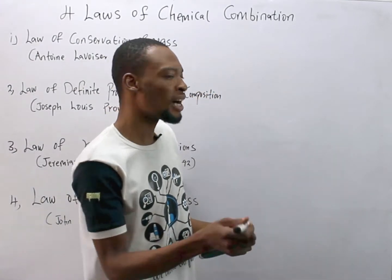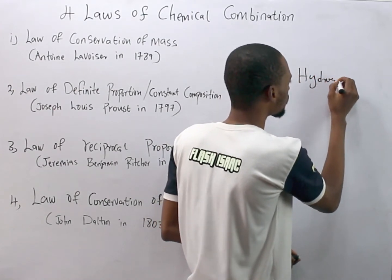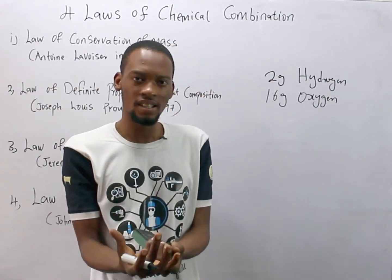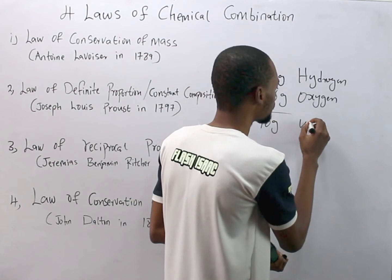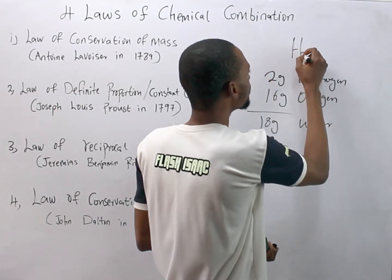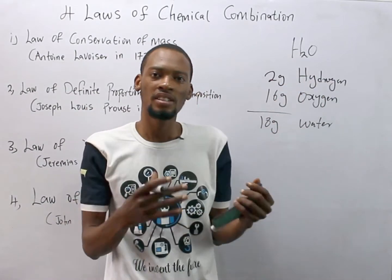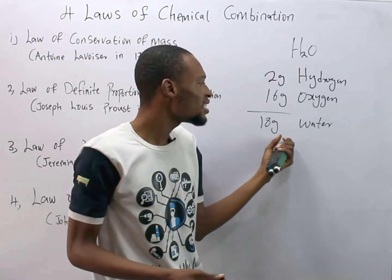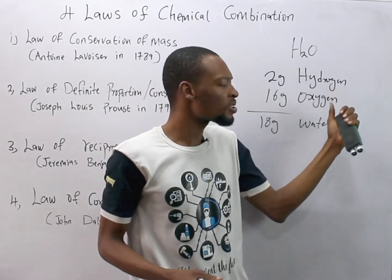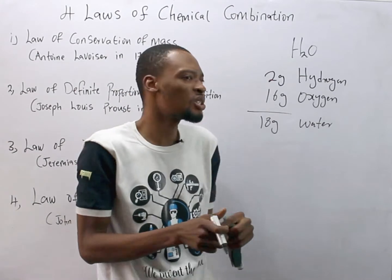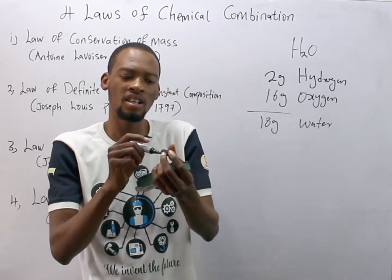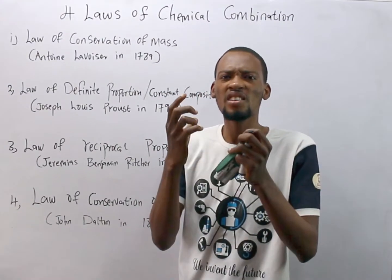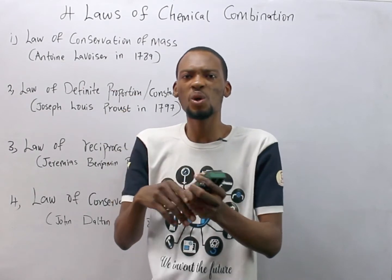For example, if you are given 2g of hydrogen and 16g of oxygen, these two elements react to give 18 grams of water — H2O. The mass of oxygen is 16 grams and hydrogen is 2 grams; after the reaction the total mass is 18 grams. Although the matter has changed — hydrogen and oxygen have changed to water — the mass is not destroyed and matter is not created; it only changed from one form to another. That is the law of conservation of mass.